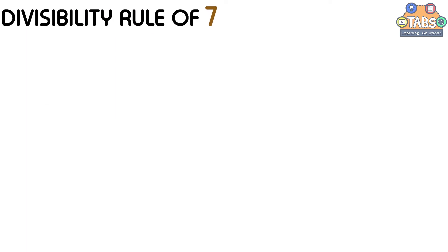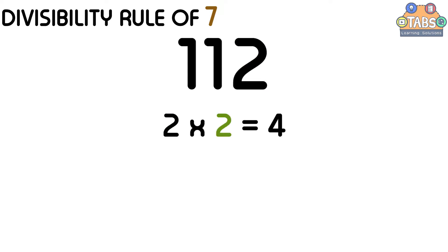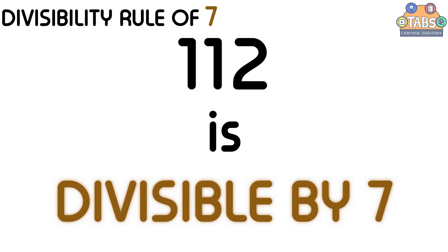Now let us try this example: 112. The first step is we need to double the last digit of the number, which is 2. 2 times 2 is equal to 4. Then we need to subtract 4 from the remaining digits of the number, which is 11. So 11 minus 4 is equal to 7. And 7 is a multiple of 7. Therefore, 112 is divisible by 7.